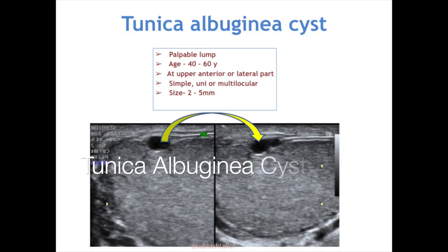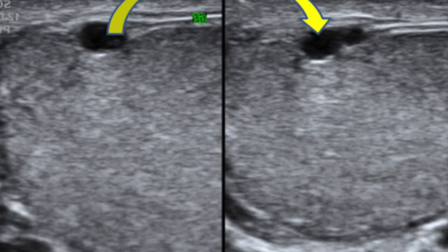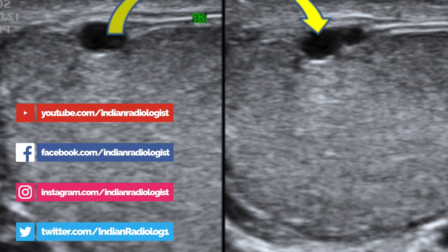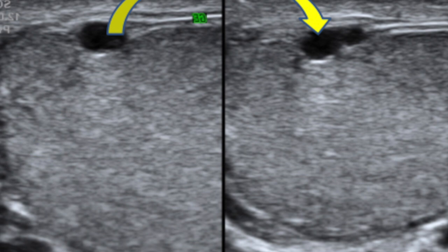Coming to tunica albuginea cyst — this presents as a small palpable non-tender mass usually affecting elderly males between 40 to 60 years of age. It is commonly seen at the upper lateral part of the testis. The cyst is simple, uni- or multilocular in appearance, and size ranges between 2 to 5 millimeters. It is a non-vascular structure and palpable as it sits at the periphery of the testis.